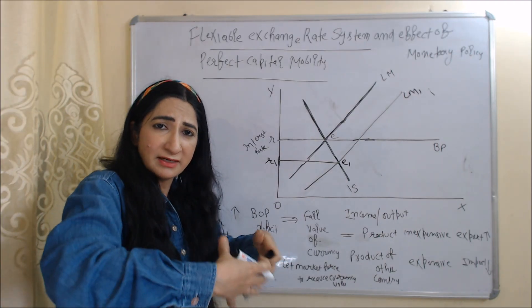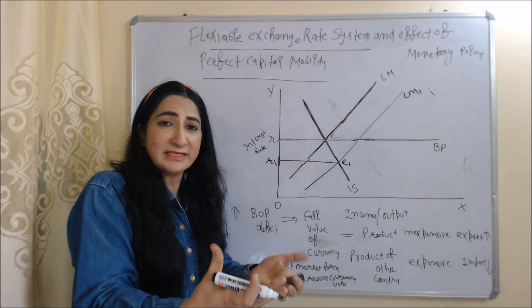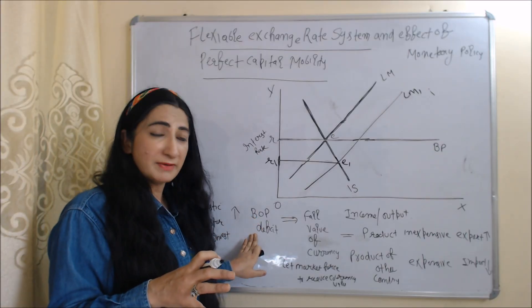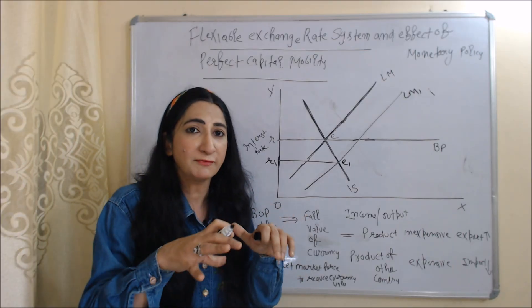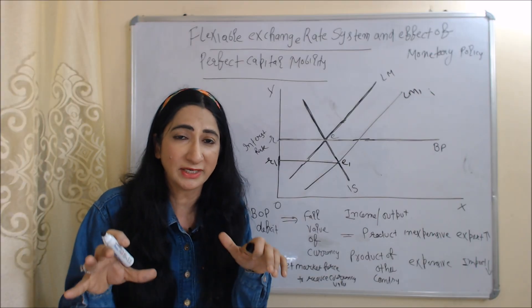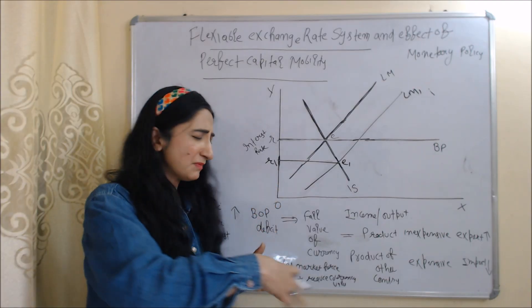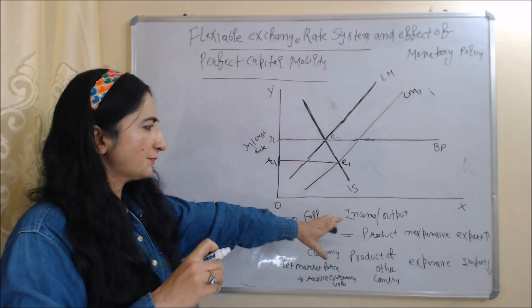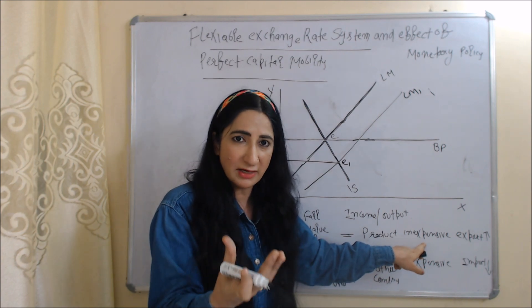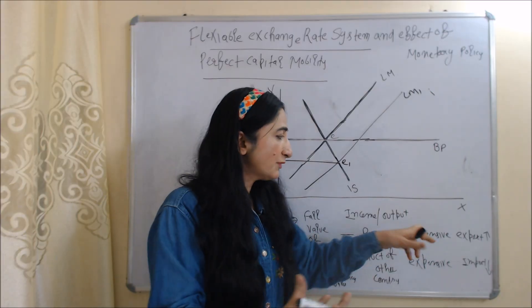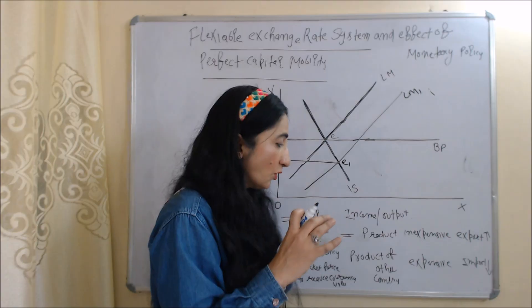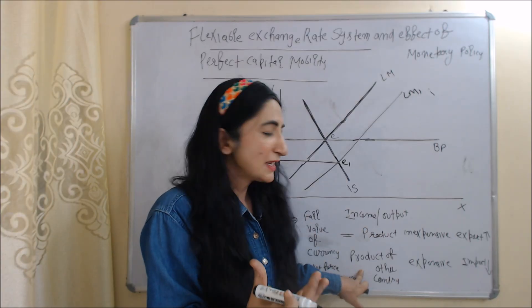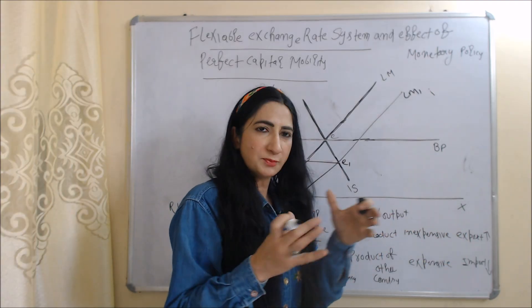As the interest rate falls, domestic investors will invest abroad, meaning our money is going out, so our balance of payment will become deficit. Deficit balance of payment can reduce our currency value. Now, since we are under the flexible exchange rate system, the central bank or government will not interfere — we let market forces reduce the currency value. As the currency value falls, our products become inexpensive for others, so our exports will increase. On the other hand, other countries' products become expensive for us, so our imports will fall.